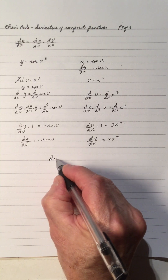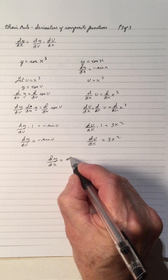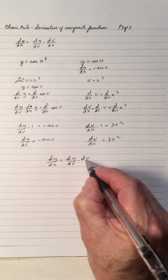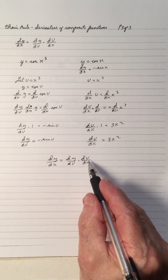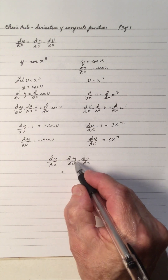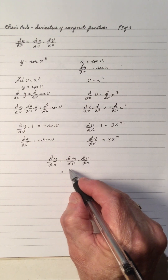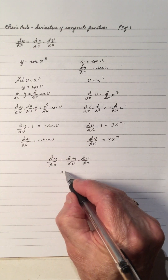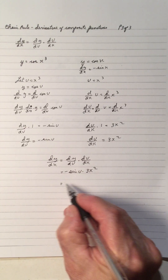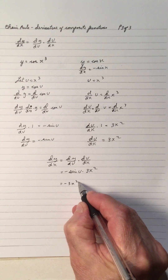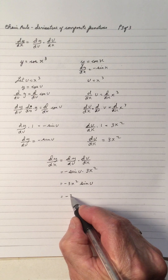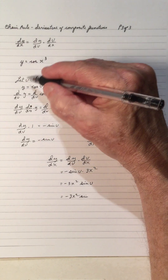dy/dx is dy/du times du/dx. The du's cancel out, giving us dy/dx. dy/du became negative sine u, and du/dx became 3x squared. Multiplying those, we get negative 3x squared sine u. Substituting back, u equals x cubed, so dy/dx equals negative 3x squared sine(x cubed).